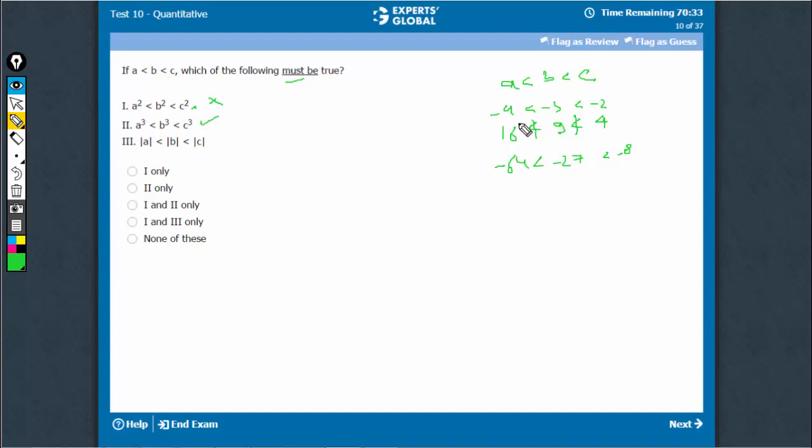This one, again, in this case, this doesn't have to be necessarily true. Minus 4, minus 3, minus 2. When you mod it up, they become 4, 3 and 2. And now, this inequation doesn't apply. So this also doesn't have to be necessarily true.